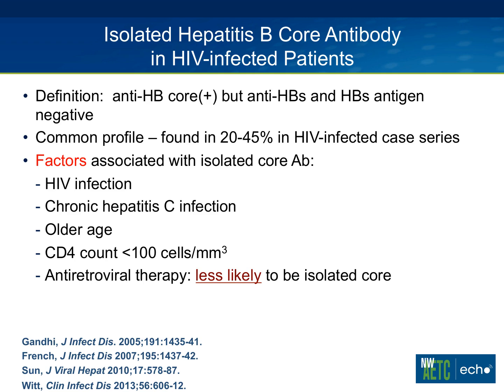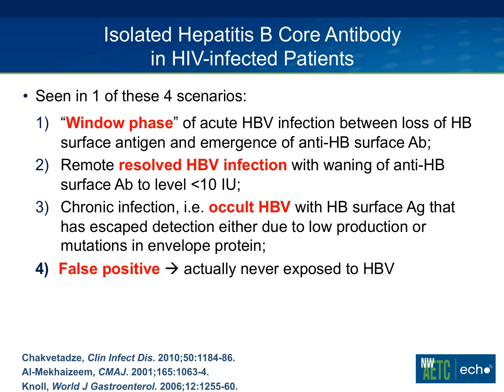The factors associated with this profile include HIV infection, chronic hepatitis C — very commonly encountered in this population — and we tend to see this a bit more often in folks who are older and, if HIV-infected, have CD4 counts less than 100. There has been one study showing that antiretroviral therapy makes it less likely to encounter this profile, which is interesting, though not as well mapped out as some other factors due to temporal issues in studies.